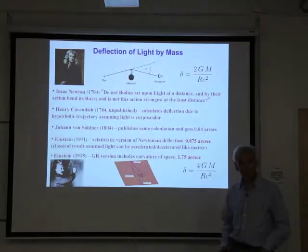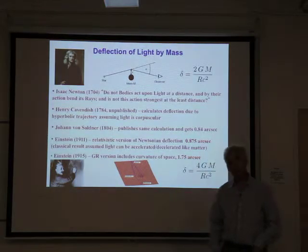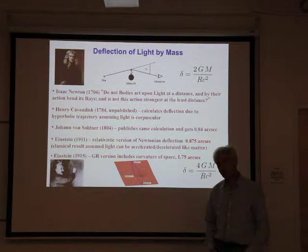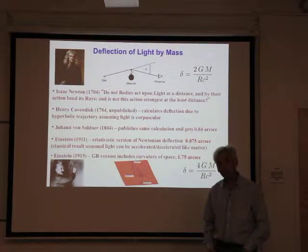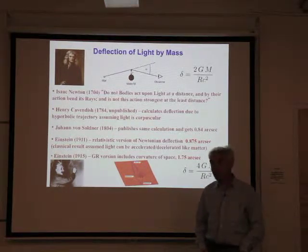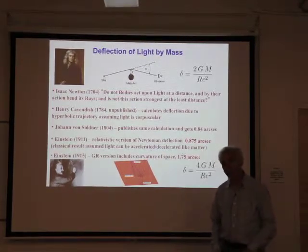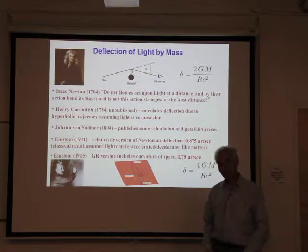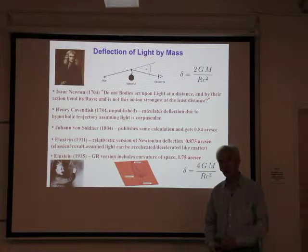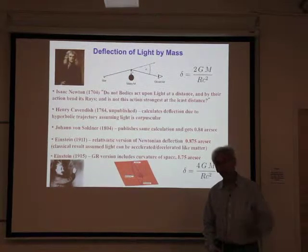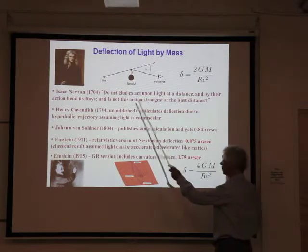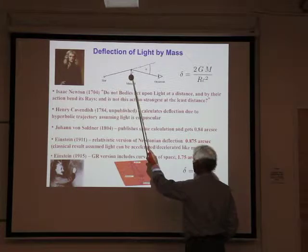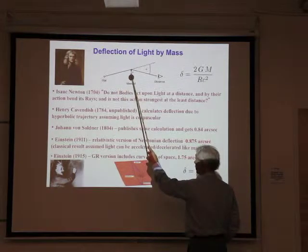We start with a little bit of history. The bending of light by massive objects has an interesting history. It was considered as a possibility by Isaac Newton as long ago as 1704 in his book Optics. There was a calculation done in 1784, but these early calculations were really incorrect because they treated light as a particle that is accelerated and decelerated as it passes a massive object. The principle of gravitational lensing is that you have some object called the lens.